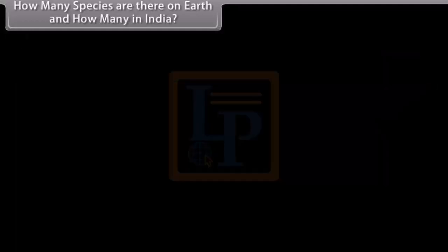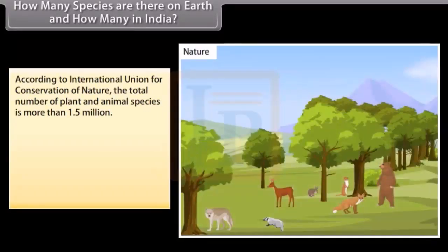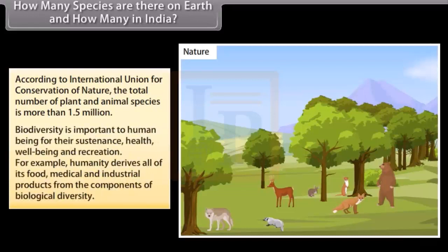How many species are there on earth and how many in India? According to International Union for Conservation of Nature, the total number of plant and animal species is more than 1.5 million. Biodiversity is important to human beings for their sustenance, health, well-being and recreation. For example,